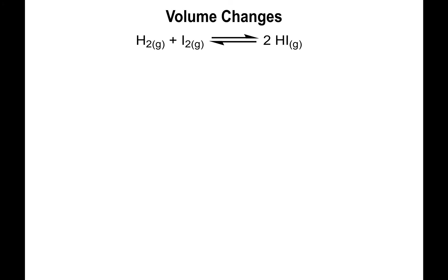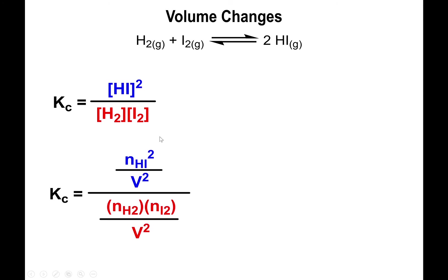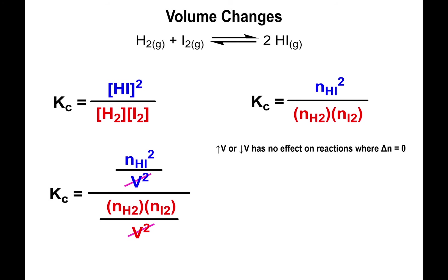Consider H₂ + I₂ turning into 2HI. In terms of concentration, the numerator has moles over volume squared, and the denominator also has moles over volume times moles over volume — also volume squared. So volume squared on top cancels with volume squared on the bottom. Changing the volume has absolutely no effect on the equilibrium of this reaction. The reason is that there are the same number of gaseous molecules on the left side as on the right side.